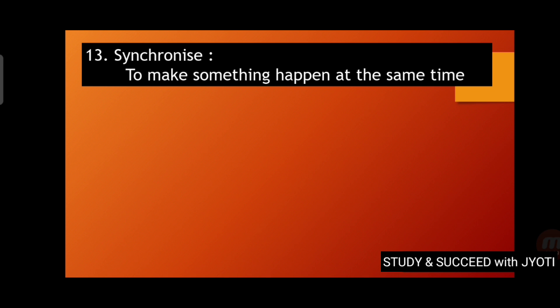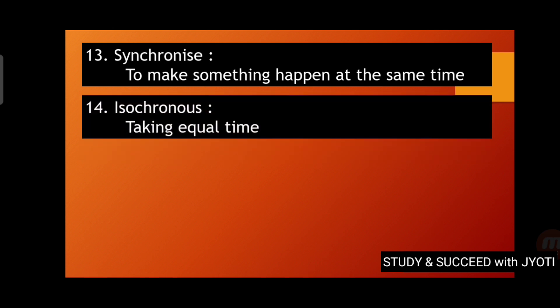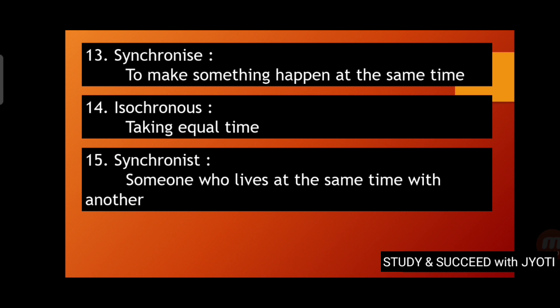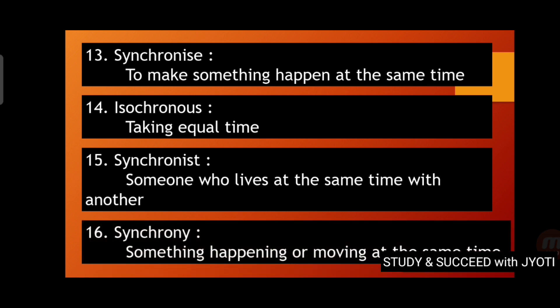Synchronize means to make something happen at the same time. Isochronous — iso means equal — so it means taking equal time. Synchronous means someone who lives at the same time with another, or something happening or moving at the same time.